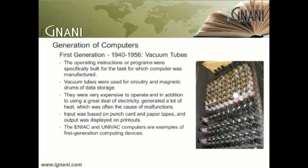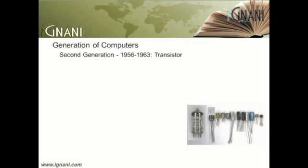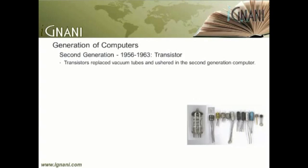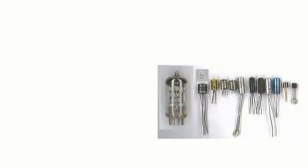While ENIAC was the world's first operational electronic digital computer, developed by Army Ordnance to compute World War II ballistic firing tables, the UNIVAC was the first commercial computer delivered to business clients. Second generation: from 1956 to 1963. Technology: transistors. Transistors replaced vacuum tubes and ushered in the second generation computer. The transistor was at work in the computer by 1956. Coupled with early advances in magnetic core memory, transistors led to second generation computers that were smaller, faster, more reliable and more energy efficient than their predecessors. In the picture you can see different types of transistors in various sizes.